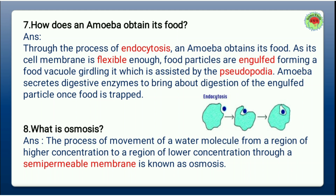Question 8: What is osmosis? The process of movement of water molecules from a region of high concentration to a region of lower concentration through a semi-permeable membrane is known as osmosis. The key difference between osmosis and diffusion is that osmosis specifically involves a semi-permeable membrane and the movement of water molecules.